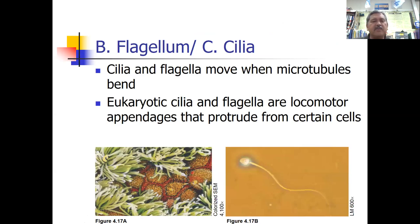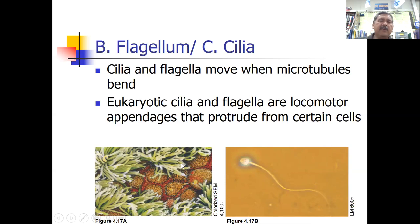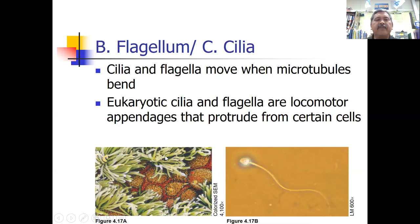Animal cells have cilia and flagella, which move when microtubules bend. A single flagellum or a pair may be present in different situations. Cilia are many hair-like structures — they might line the tract of the respiratory system, for example. Whenever there's movement to be had, flagella and cilia are the parts of the cell involved in that movement.